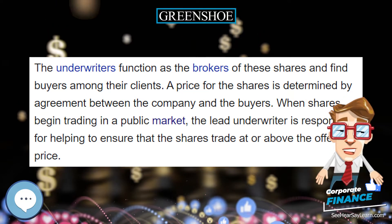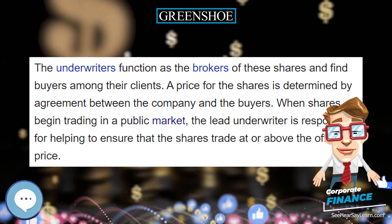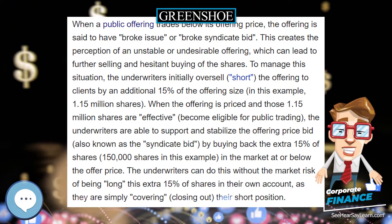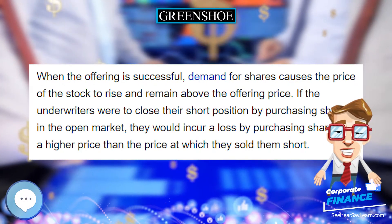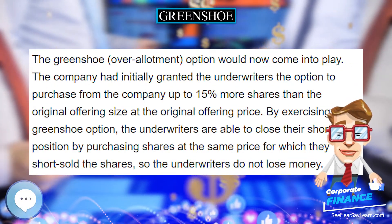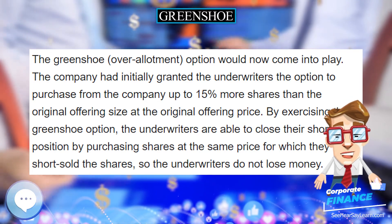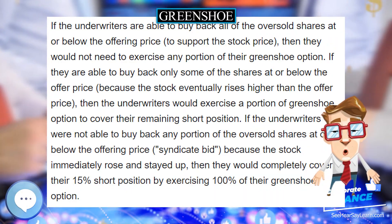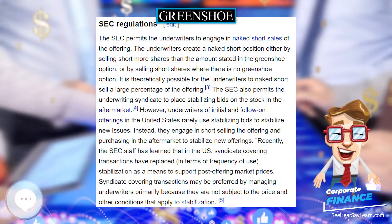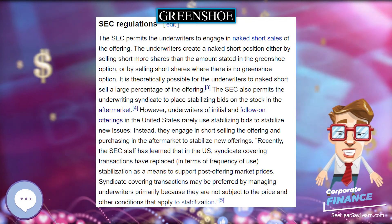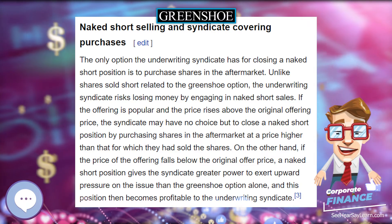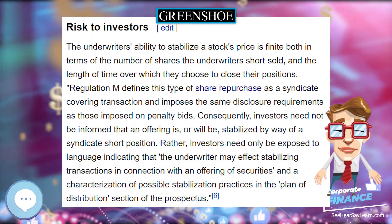The term is derived from the name of the first company — Green Shoe Manufacturing, now called Stride Rite Corporation — to permit underwriters to use this practice in an IPO. The use of green shoe options is now widespread for two reasons: first, it is a legal mechanism for an underwriter to stabilize the price of new shares, reducing the risk of their trading below the offer price immediately after an offering — an outcome damaging to both issuer and underwriter.